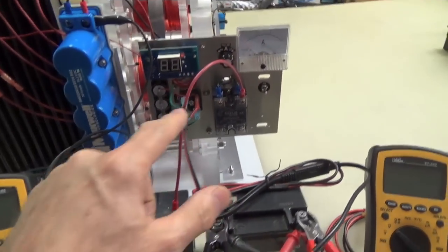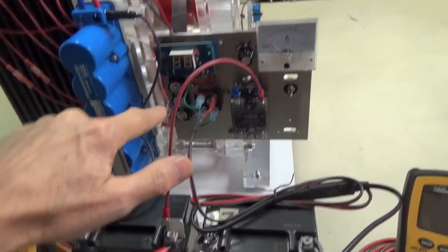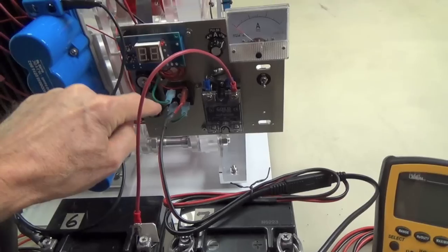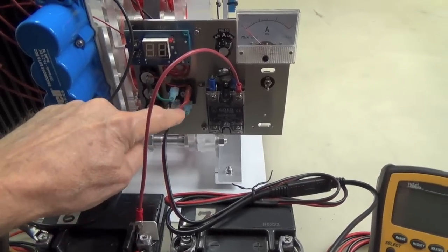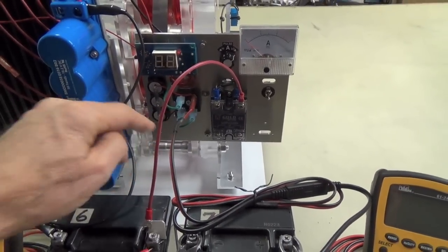Now, this one charges differently. There's a bridge rectifier here. The green wires that you see in here are the AC coming off the generator. And then you've got your positive and negative coming off of that.